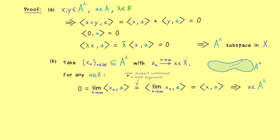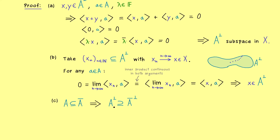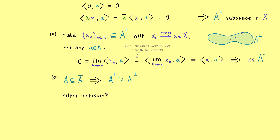Let's go to part (c). For any set A, the closure is usually bigger but never smaller — we always have this subset relation. It is not hard to show that the orthogonal complement always reverses such a subset relation: if we apply the orthogonal complement to both sides, the subset relation reverses. This is a general relation: if we increase the set, the orthogonal complement gets smaller. In part (c) the question is whether we also have the other inclusion, since both inclusions together give equality.